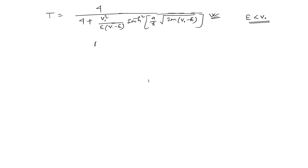You can find the reflection coefficient R = |B|²/|A|² as an exercise. Now, an interesting case: even when the energy of the particle is very much less than V₀, there is still a finite transmission probability T ≠ 0. We have already obtained T, and since it is not zero, there is a finite probability of the particle overcoming the barrier even though its energy is less than the barrier height.